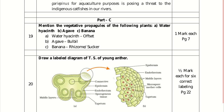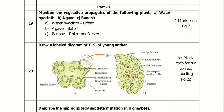Draw a neat labelled diagram of transverse section of a young anther. You draw the butterfly-shaped ground plan labelling: connective tissue, epidermis, endothecium, sporogenous tissue, tapetum, and middle layers. In the enlarged cellular view, label epidermis, endothecium, two middle layers, microspore mother cells, and tapetum. Since it is a young anther, you name microspore mother cells; in an old anther, draw pollen grains with exine and intine. Six labellings at half mark each fetch three marks.